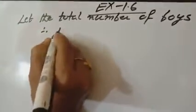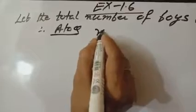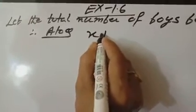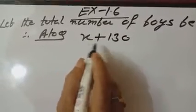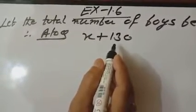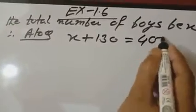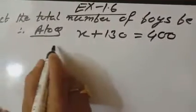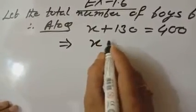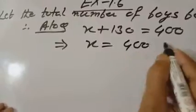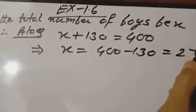Therefore, according to the question, number of boys is x and number of girls is 130. Number of boys plus number of girls equals total number of students, which is 400. So x + 130 = 400. Therefore x = 400 - 130 = 270.